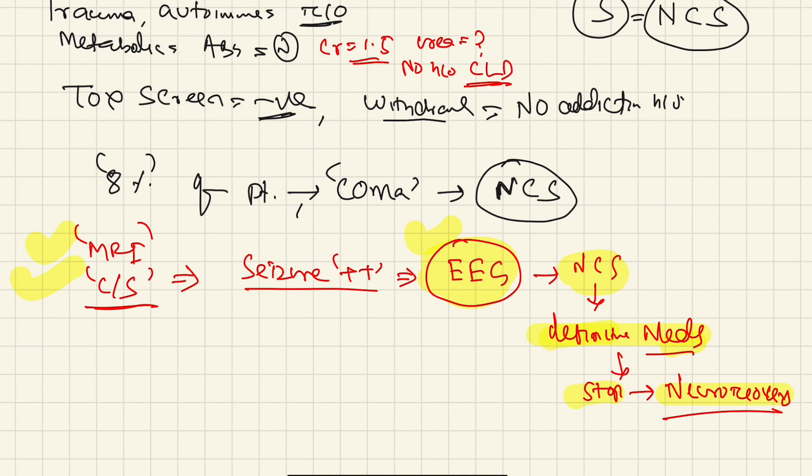But the thing that should take precedence over all other things is the EEG. So in this case we have to do an EEG next to rule out any non-convulsive status. If it is there, then you have to treat it immediately. If it is not there, we have to go ahead with doing MRI or cultures and start antibiotics. So thank you very much. The answer will be EEG.